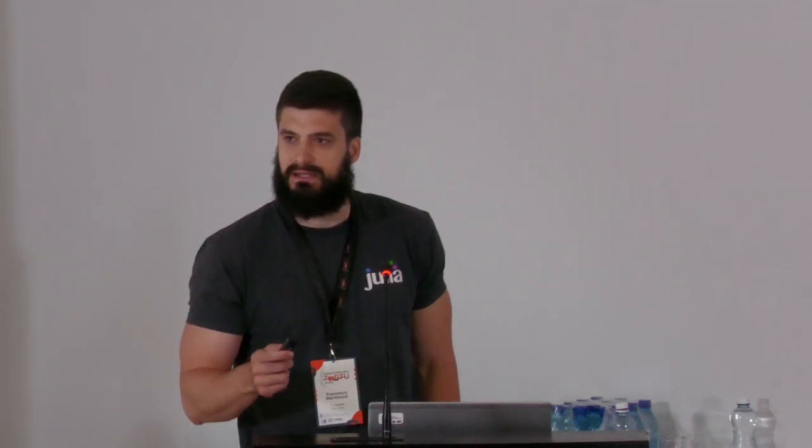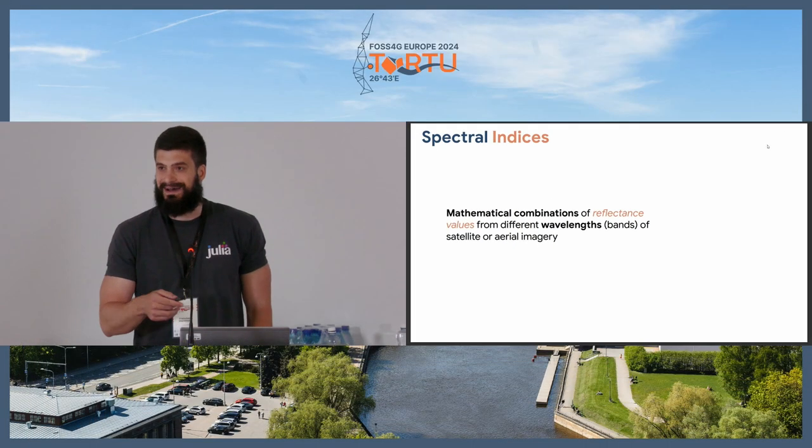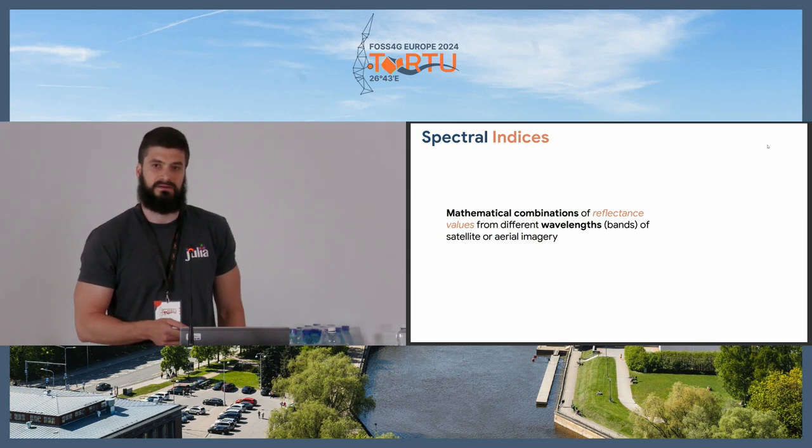Broadly speaking, we can define spectral indices as mathematical combinations of reflectance values from different wavelengths or bands obtained from satellite or aerial imagery. Throughout the presentation, I will use wavelengths and bands interchangeably — they mean more or less the same thing in this scope. The value of these mathematical combinations is that they can underline or even hide some specific effects of land properties.